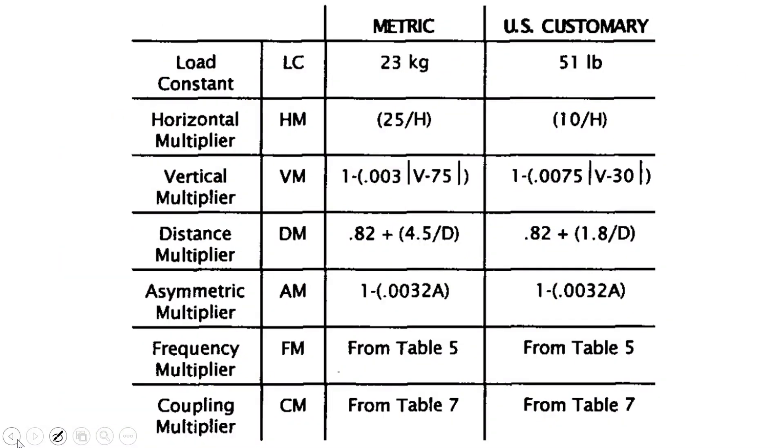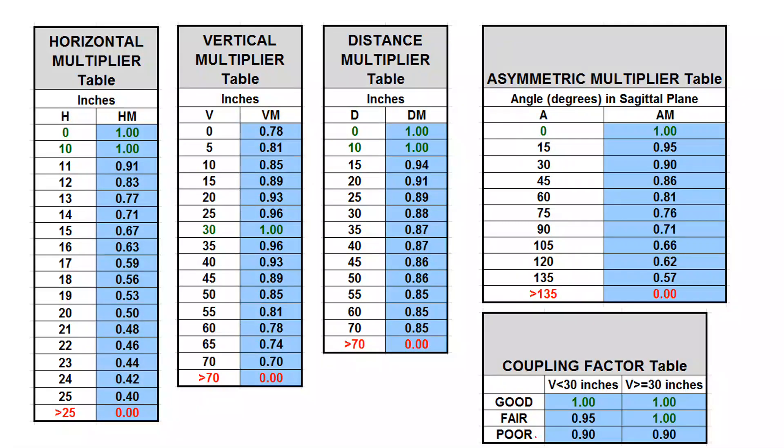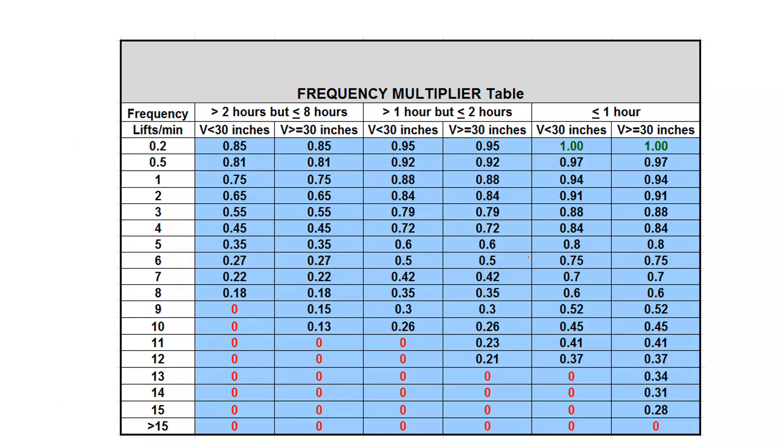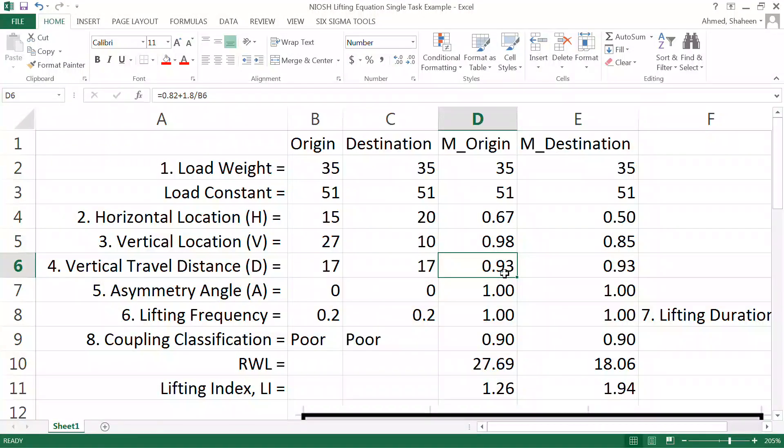Now, you don't have equations for all of these. The frequency multiplier and the coupling multiplier have to come from the table. For the coupling multiplier, there is no handle. It's really, really poor. So you're going to use 0.9 for both of them. This is the frequency multiplier. The lift is less than one hour, so we're looking at the last column here. The vertical distance traveled is less than 30 inches, so it's going to be 0.2 for the frequency multiplier. These are all equation returns. The asymmetry was zero. I also used the equation for asymmetry. But the frequency multiplier and coupling multiplier are obtained from the table.